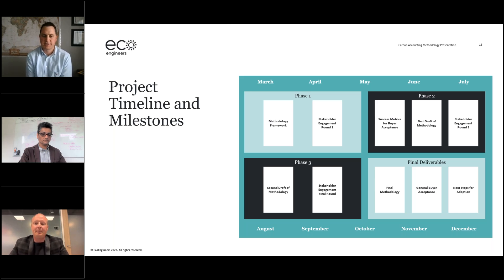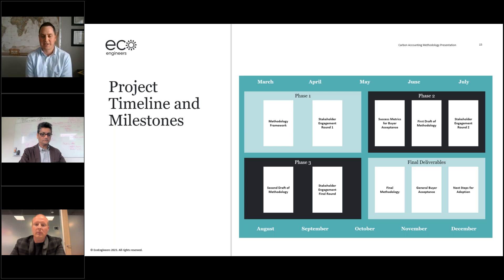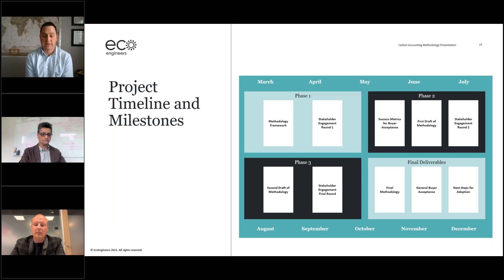Brad is turning it over to me to talk about the project timeline, milestones, and how you can engage to provide input or be part of the team that frames up the overall carbon accounting methodology. Not only do I get to bring in a really diverse group from our own internal team — our RNG, biogas, LCA, and voluntary markets people — I also have access to the experts at ABC and, more importantly, all of you. One thing to point out as you look at phases one, two, and three is that stakeholder engagement happens along the entire process. Your feedback and comments are absolutely critical, because the more we can gather, the better this methodology and tool is going to be.